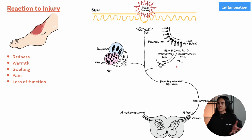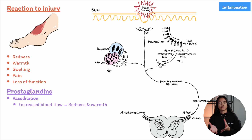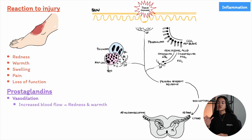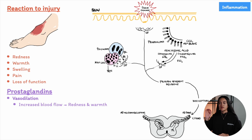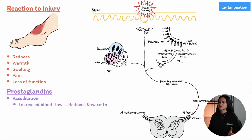Among the various mediators, prostaglandins produced from arachidonic acid are particularly important in the inflammatory response. During acute inflammation, prostaglandins directly affect blood vessels by relaxing the smooth muscle in their walls, causing the vessels to widen — a process called vasodilation. When blood vessels dilate, their diameter increases, which reduces resistance to blood flow and allows more blood to reach the affected area. This increased blood flow causes two classic signs of inflammation: redness and warmth.